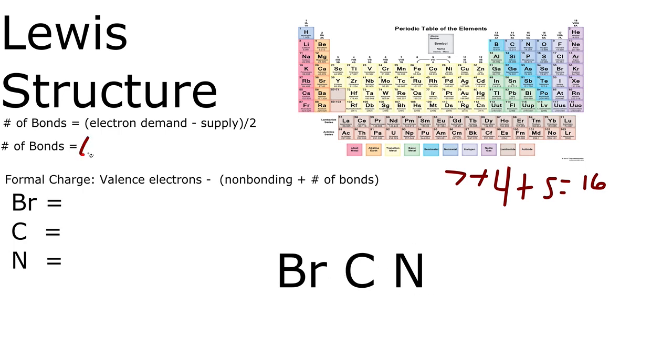So our electron demand will be 24, 8 times 3, minus our supply, which is 16. We'll divide that by 2. 8 divided by 2, which is 4.